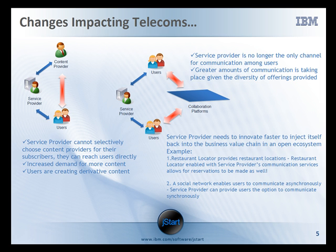First, telecoms need to take stock of their core network capabilities — presence, messaging, etc. — as well as the content they can offer, for example business directories. Next, they need to find ways to inject their core services and content into the open content ecosystem. A basic example of this is the restaurant locator service, where a telecom operator can add value to the consumer by enabling reservations to be made via their communication offerings.